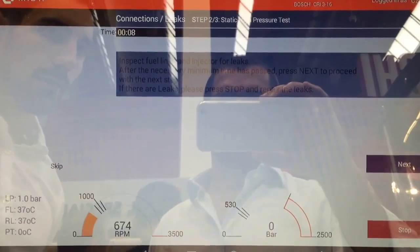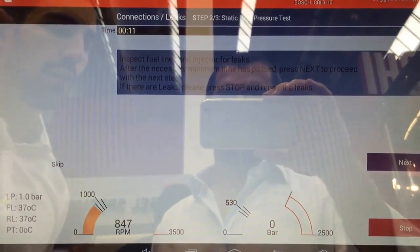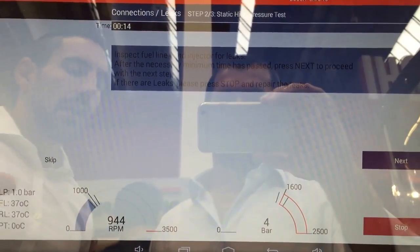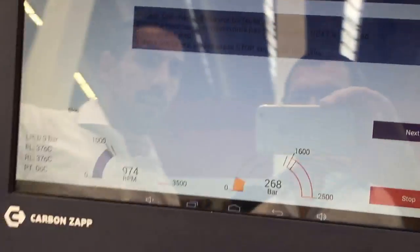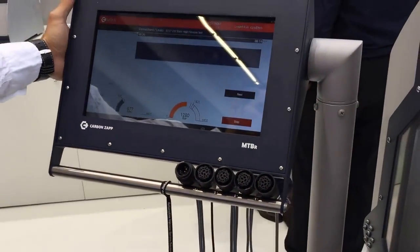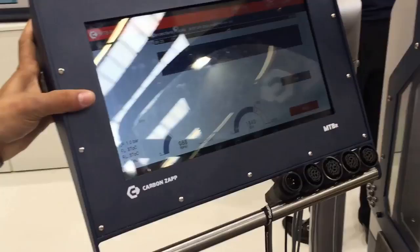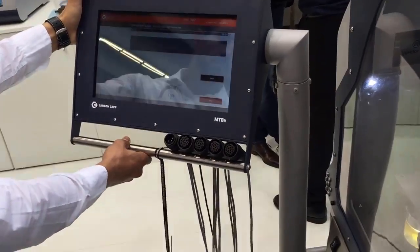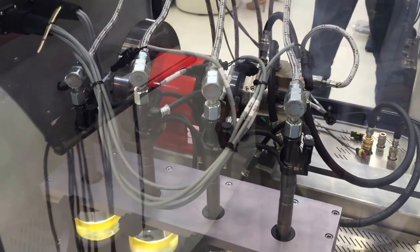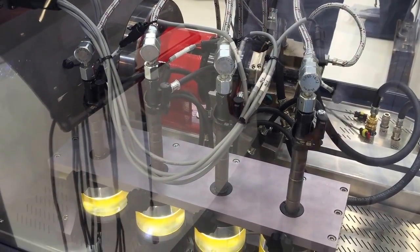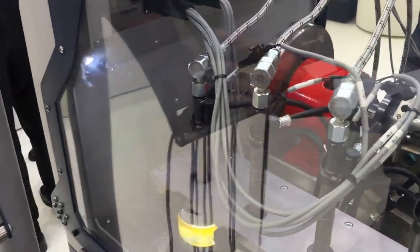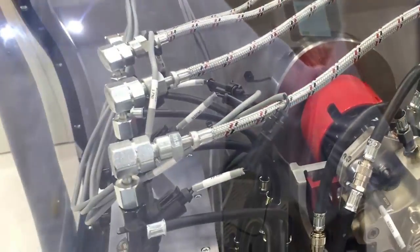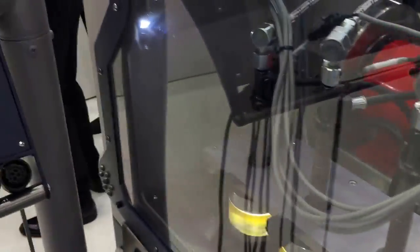Then we can go to the second test, again static pressure to the injectors. Here we have the control panel, HMI panel that is very useful from 360 degrees. And then the third step is dynamic. I believe it's okay.